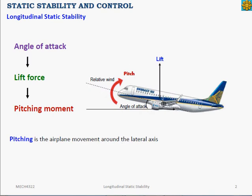An aircraft has six degrees of freedom of motion, and we describe its motion in terms of longitudinal motion, lateral motion, or directional motion. Right now we are discussing only the aircraft's longitudinal motion, which concerns pitching motion. The sign convention for pitching is that a positive pitching motion is nose-up, while negative pitching motion is nose-down.